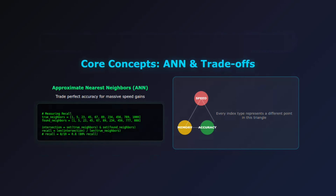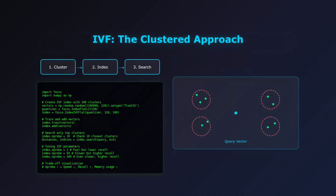Let's start with IVF, inverted file index. Think of this like organizing a massive library — instead of searching through every book, you first decide which section to look in, then search within that section. IVF works by clustering your vectors into groups using k-means. With 1 million vectors and 1,000 clusters, each cluster contains roughly 1,000 vectors. When you search, IVF first finds the closest cluster centroids to your query, then only searches within those clusters. By setting nprobe equals 10, we're saying check the 10 most promising clusters instead of all 1,000. IVF shines with large datasets where you can afford some memory overhead for the cluster information — it's particularly good for generic search applications where you need a balance of speed and accuracy.